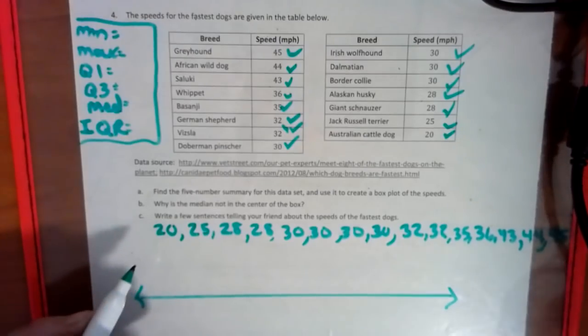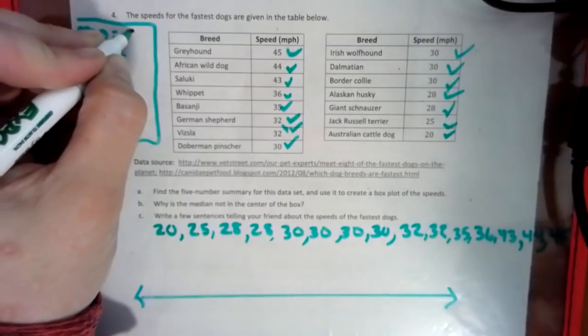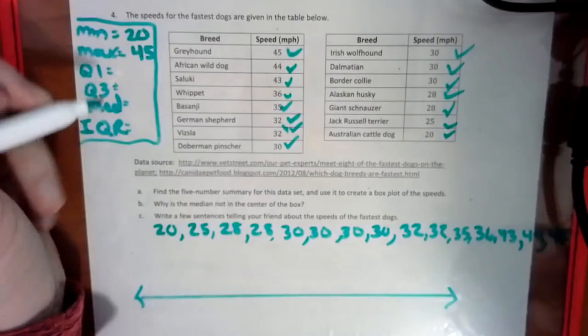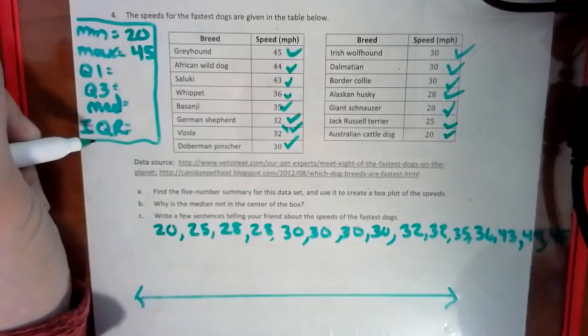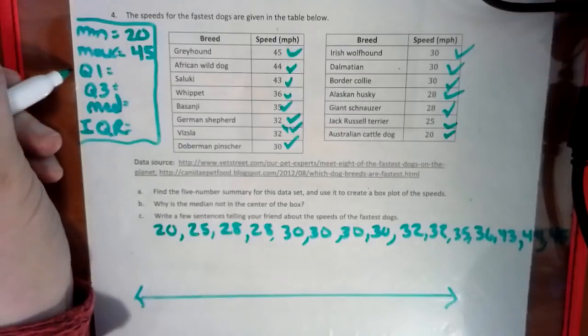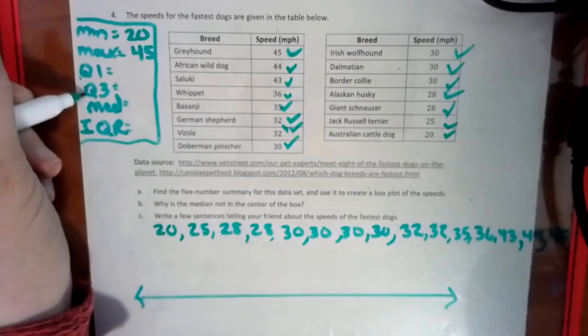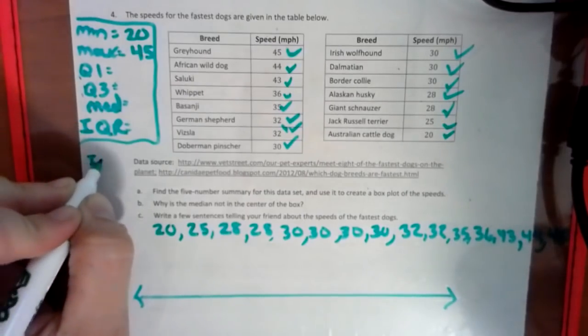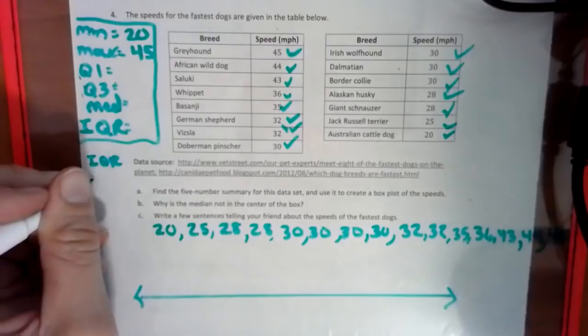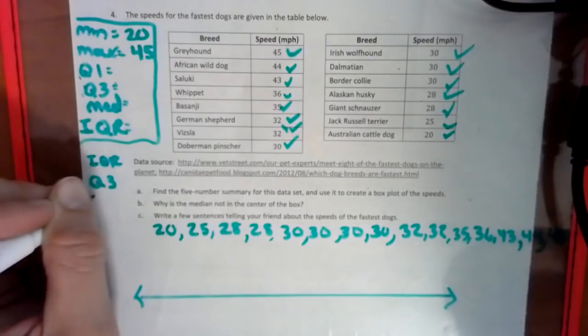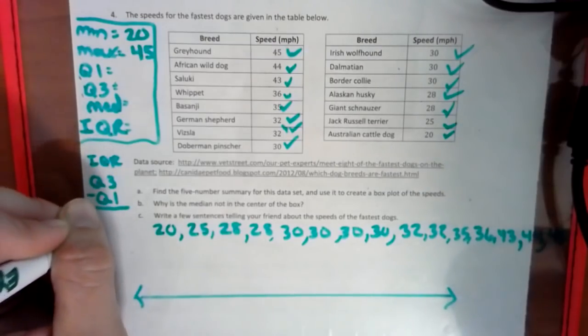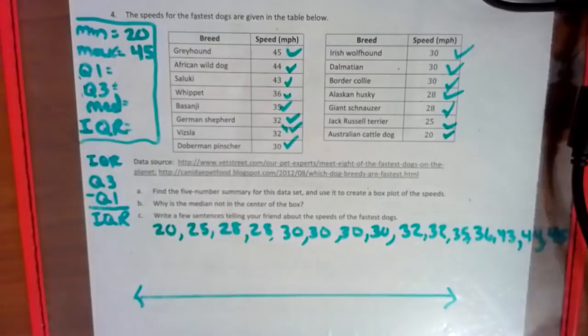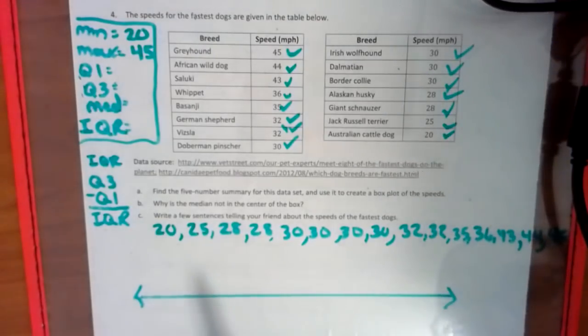So min, easy: 20, smallest number. Max, easy: 45, highest number. Okay, so we didn't explain what IQR is and we're going to explain that in a minute. It involves the subtracting of the Q's, these two Q's. Okay, so IQR is Q3 minus Q1 equals IQR.